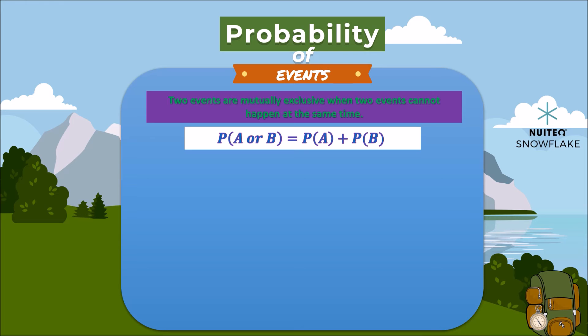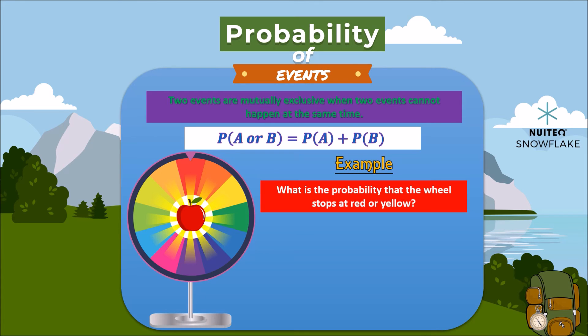A good example will be two mutually exclusive events as a wheel of fortune. Let's say you win an apple if you end up in a red or a yellow field. What is the probability that the wheel stops at red or yellow? Probability of red is represented as 1/12, and probability of yellow is represented as 1/12. So, probability of red or yellow will be the result of adding both probabilities. See?